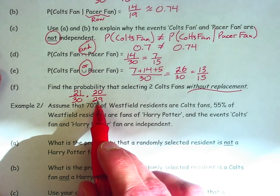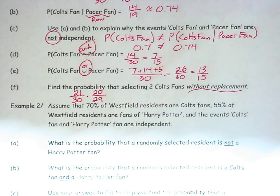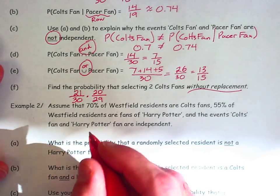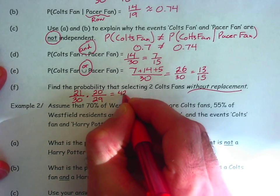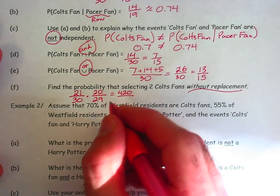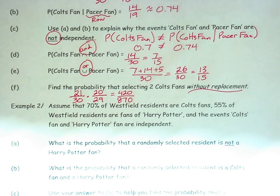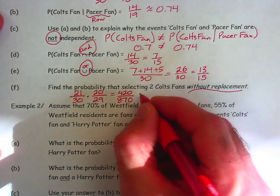So these two probabilities multiplied together, that would make the probability of selecting two Colts fans without replacement. So 21 times 20, that makes a total of 420. The denominator is 30 times 29. That's a total of 870. So that's a perfectly acceptable answer. You could reduce it if you wanted to, or you could turn it into a decimal if you wanted to. It's about 0.48.